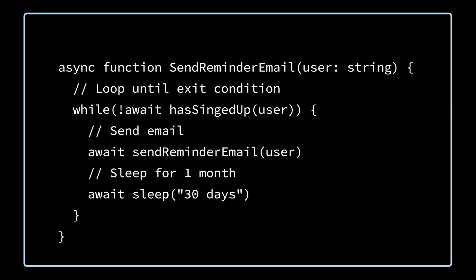Check out this example. This snippet illustrates a workflow that loops forever until it hits an exit condition, sleeping one month in between iterations — as if failure and time limits do not even exist. Curious? Learn more about workflows and workflow systems at Temporal.io.